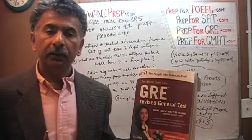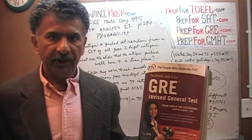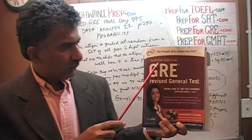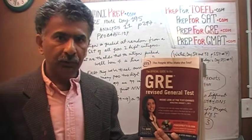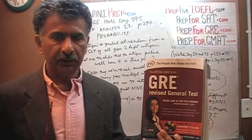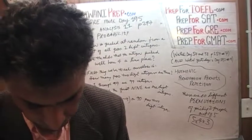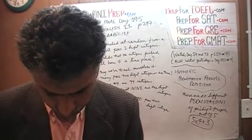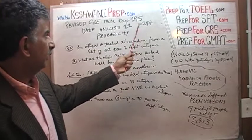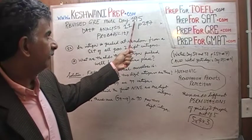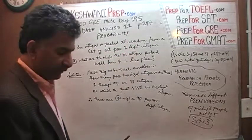We are here because we want to prepare for the GRE. We have been solving GRE math problems out of this book here, the official guide to the GRE, the revised general test. If you do not own this book already, purchase one immediately — you're going to need it. The problem we are about to solve is on page number 297, and today is our lesson number 195. We're going to solve problem number 11 on page 297.